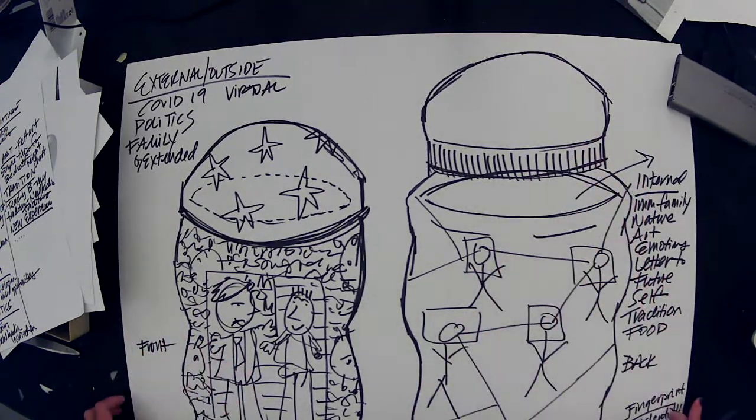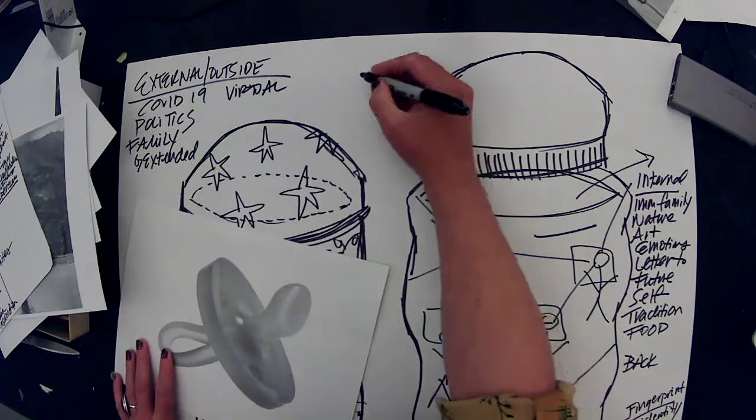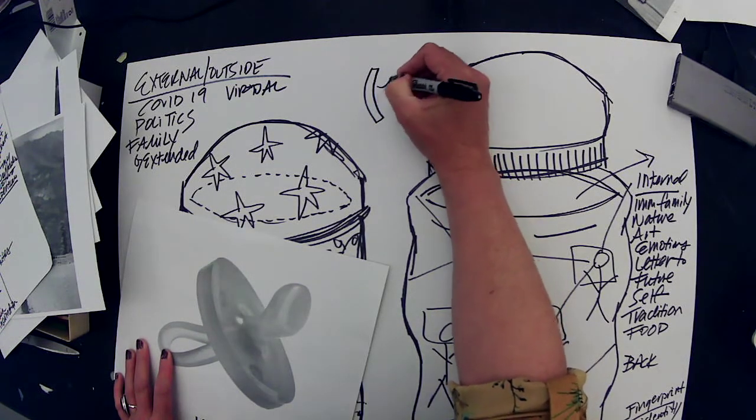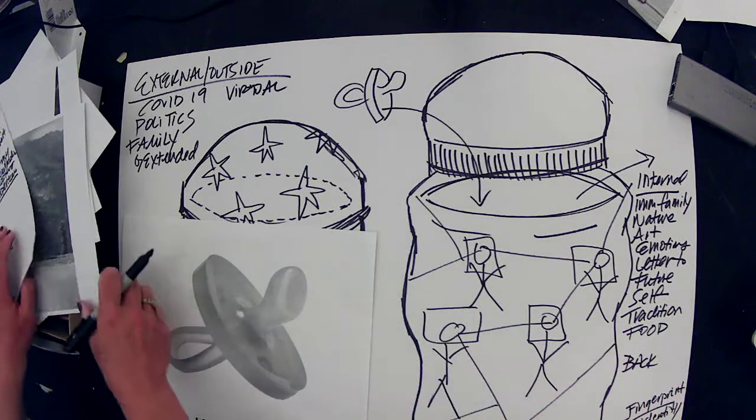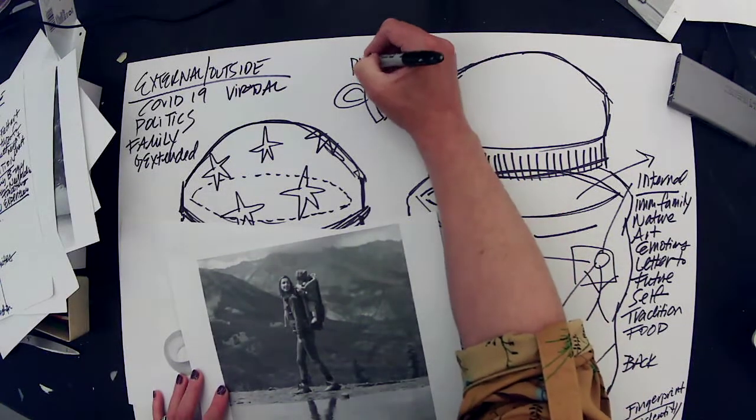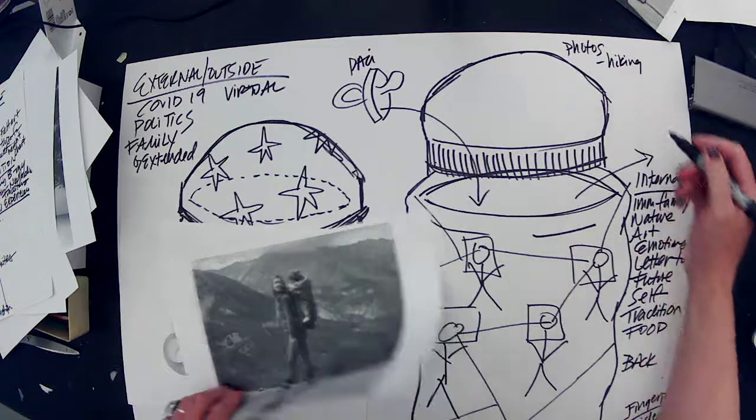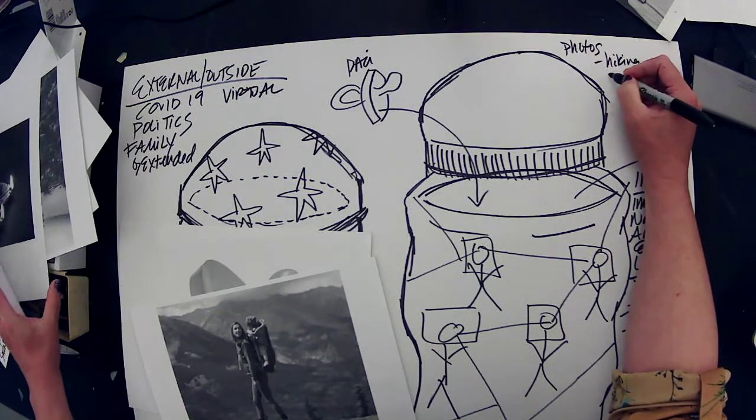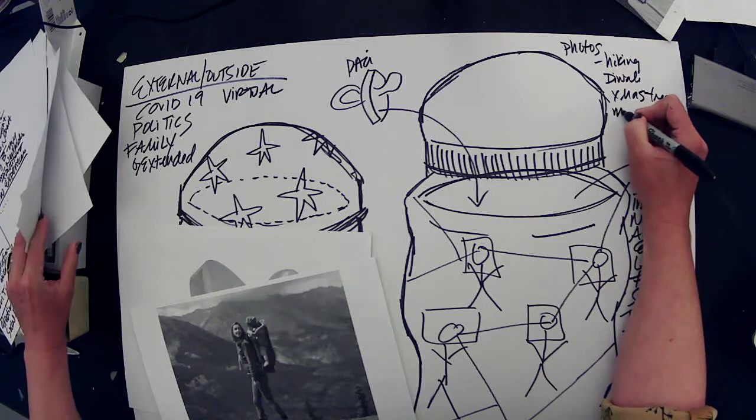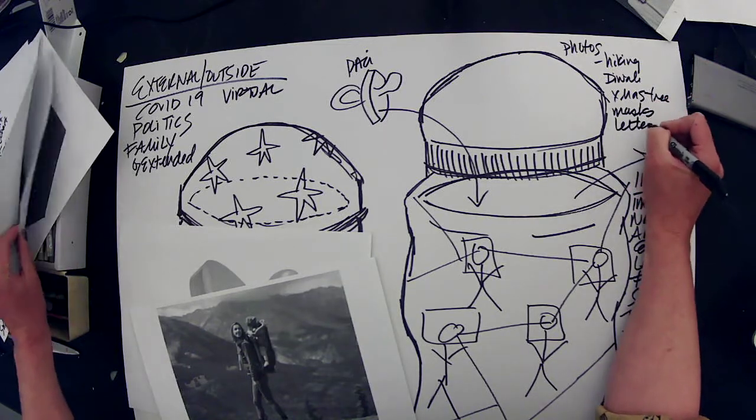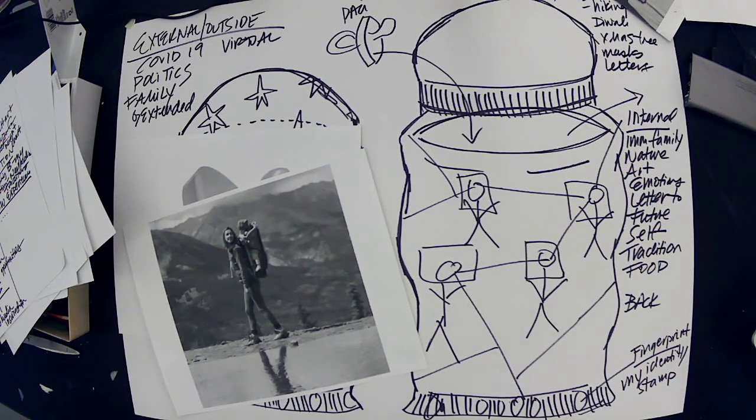And then inside, what's going to go inside? Here's where you could take your objects and you could maybe draw them out and just kind of arrow it in there. Photos, hiking, Diwali, Christmas tree, mask, letters, anything. Walk around your house and try to find things that would really help you connect.